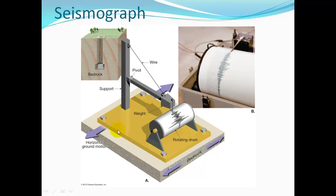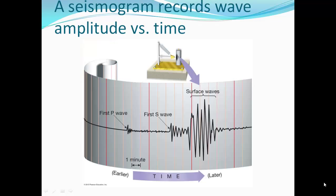The seismograph device is mounted on a block, and the seismogram is the record being drawn as the Earth vibrates. Looking at a seismogram over time: before the earthquake there's no vibration, then the first P wave arrives, followed by the S wave, and then the surface waves.